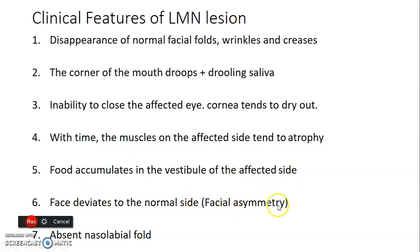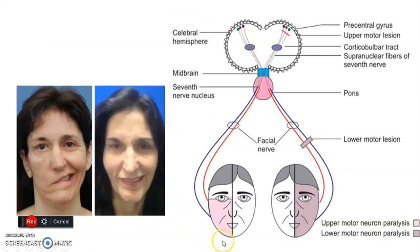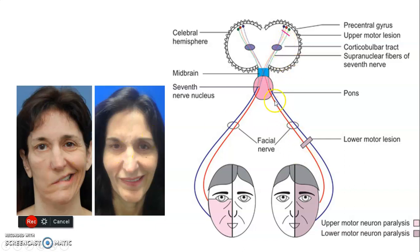The face deviates to the normal side because of facial asymmetry, and there is an absent nasolabial fold. In lower motor neuron lesion, when you ask the patient to smile, the face deviates to the normal side — the normal side has wrinkles and nasolabial fold, but the affected side does not. To summarize: upper motor neuron lesion spares the upper part of the face but affects the contralateral side of the lower face, whereas lower motor neuron lesion affects the ipsilateral entire half of the face.